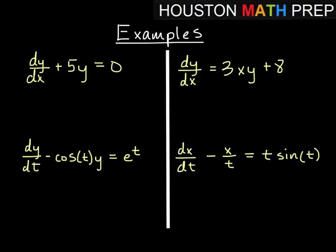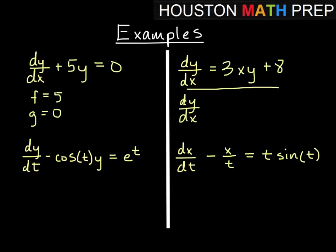Here are some examples of linear equations. In the first one, dy/dx plus 5y equals zero — this is in the form we wanted. Here f is the constant 5 and g is the constant function zero. For the second example, we can put it in linear form as dy/dx minus 3xy equals 8. Now it's in the form of a linear equation, where f equals negative 3x and g is the constant 8.